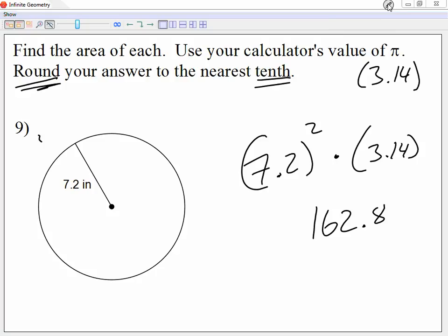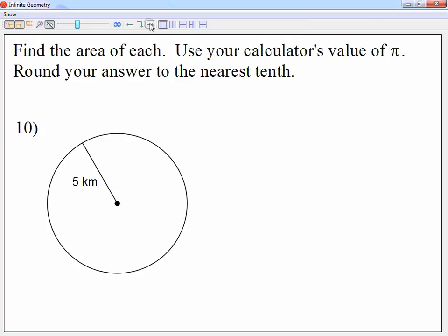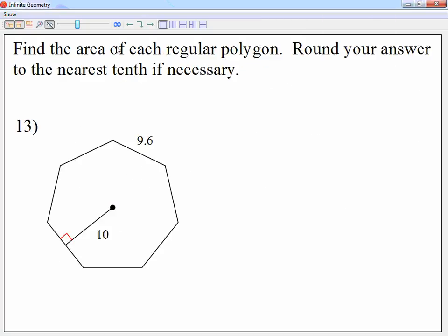Okay. Now on the back, question number 13, area of regular polygon. Let's find the area of each regular polygon. Round your answer to the nearest tenth if necessary. I'll give you guys a formula as one half times the perimeter times the apothem. That was the formula we covered. For the calculator, one half is 0.5.